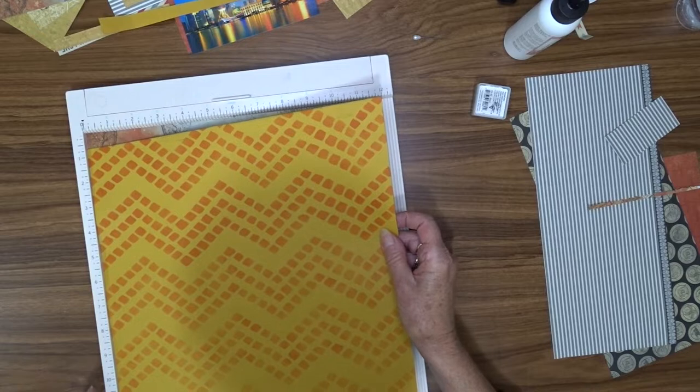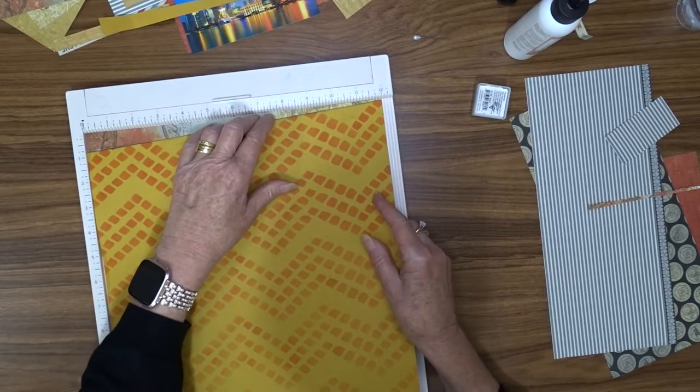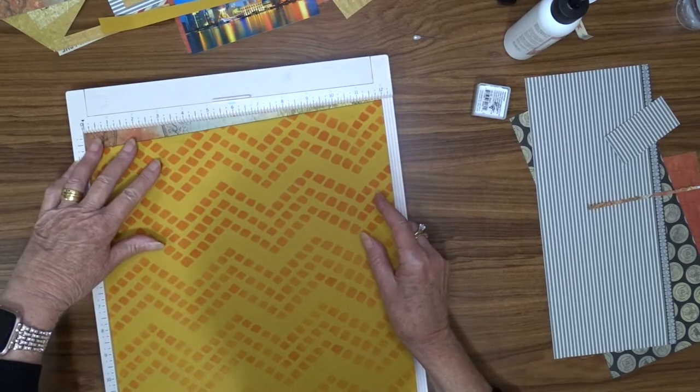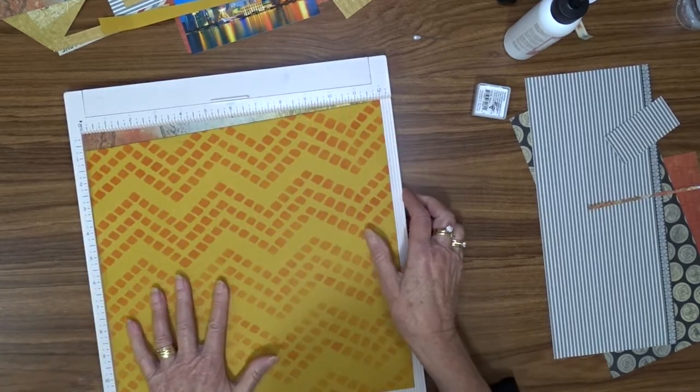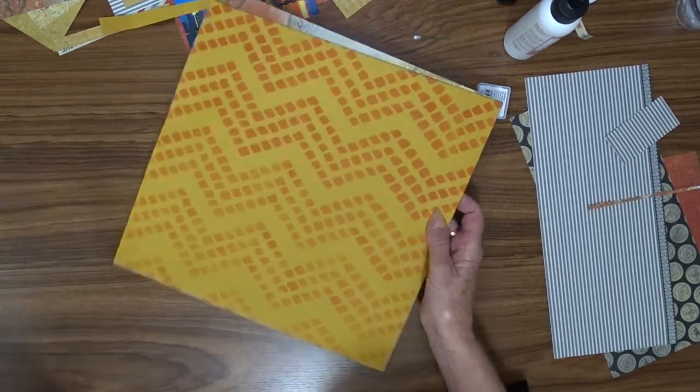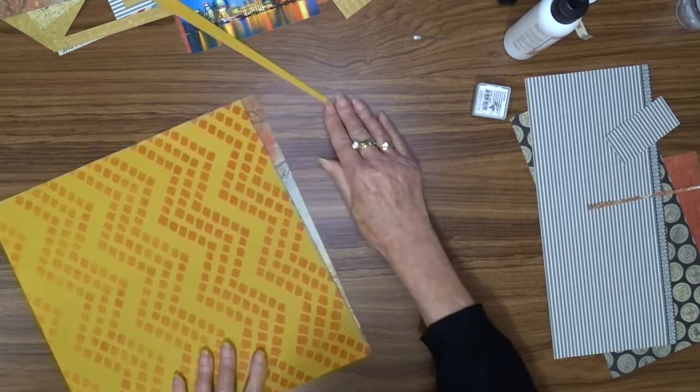I stuck this down once and then realized I'd forgotten to ink the edge of my cardstock, so I quickly took it off before it had time to attach, inked it, and then stuck it back on using exactly the same method that I used the first time.